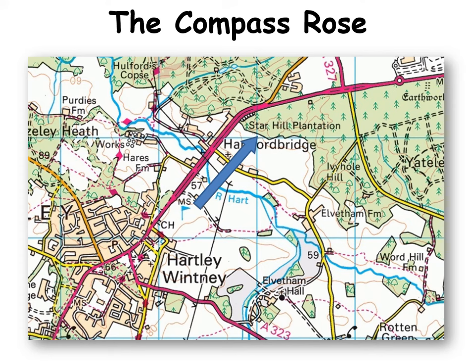Let's look at another one. Imagine we wanted to go from the golf course down to this place of worship, or down to Elvertham Hall. So we're traveling in this direction. To the right is east, down to the bottom is south. It is between south and east, so it becomes southeast.